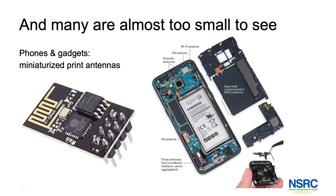Some antennas are so small we can barely see them — they're built into devices. On the left you can see a typical meandering, winding-river print pattern: that's a Wi-Fi print antenna on a very small IoT device. In mobile phones there isn't a lot of space, and you have to fit in antennas for Wi-Fi, cellular, and Bluetooth. They're printed antennas — very small, and we typically don't see them.